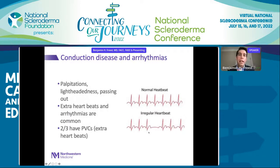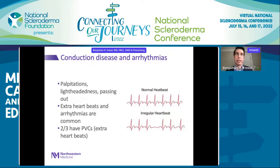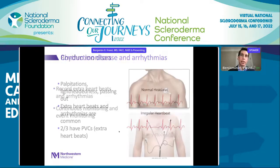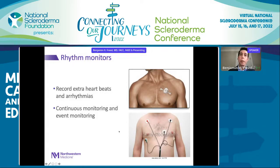Many scleroderma patients get palpitations or lightheadedness due to fibrosis of the conduction system causing benign arrhythmias. Two-thirds can have PVCs — premature ventricular complexes — which are generally benign, though more than 1,000 in 24 hours has been shown to lead to worse outcomes. Patients often wear a heart monitor to correlate symptoms with the type of arrhythmia occurring.